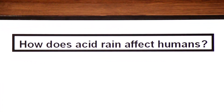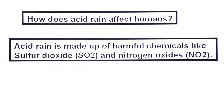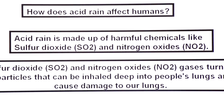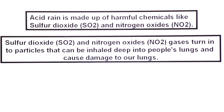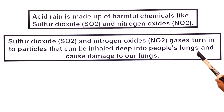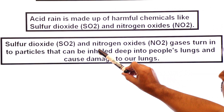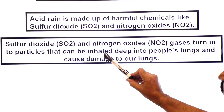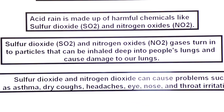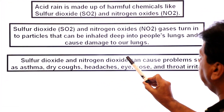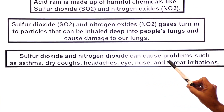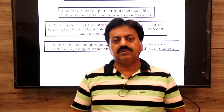Now we come to human health. What is the effect of acidic rain on the health of human beings? Acid rain is made up of harmful chemicals like sulfur dioxide and nitrogen dioxide. These gases turn into particles that can be inhaled deep into people's lungs and cause damage. Sulfur dioxide and nitrogen dioxide gases can cause problems such as asthma, dry coughs, headaches, and eye, nose, and throat irritations. So this is all about acidic rain and its effects. Thank you dear students, wish you all the best.